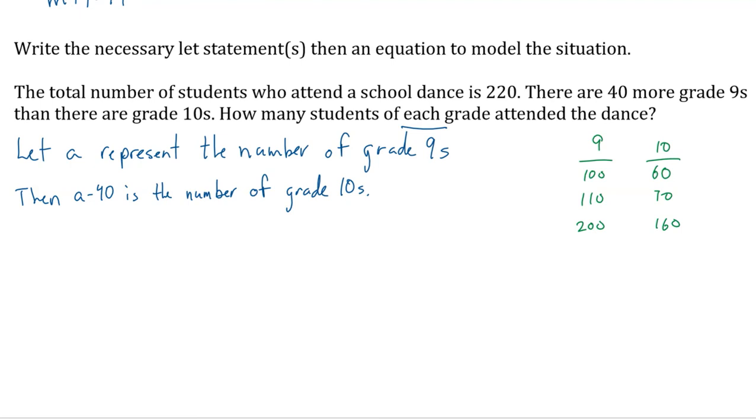Now, how do we write an equation? What happens if the total number of students is 220? Doesn't that mean the number of grade nines plus the number of grade tens is 220? So what's the number of grade nines? Not what's the answer.